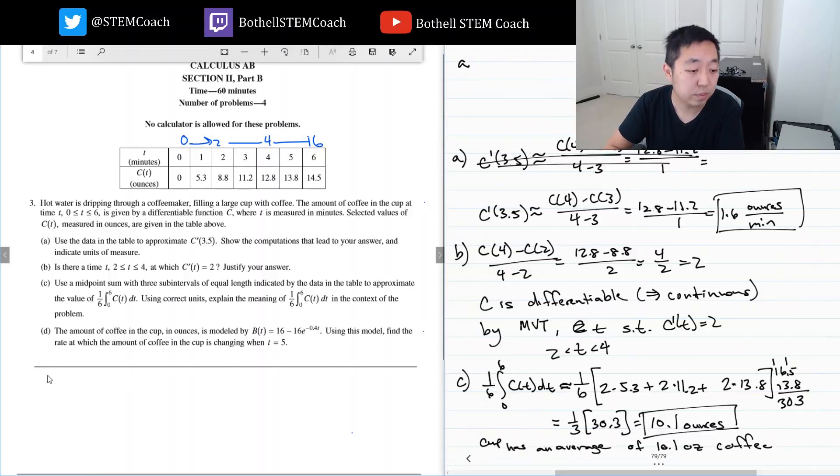Part d: The amount of coffee in the cup in ounces is modeled by this. Using this model, find the rate at which the amount of coffee in the cup is changing when t equals 5. b prime is the rate of change, so I've got to take the derivative of this. The derivative: 16 constant is zero, do this minus 16 times the derivative, which is minus 0.4 e to the minus 0.4t.